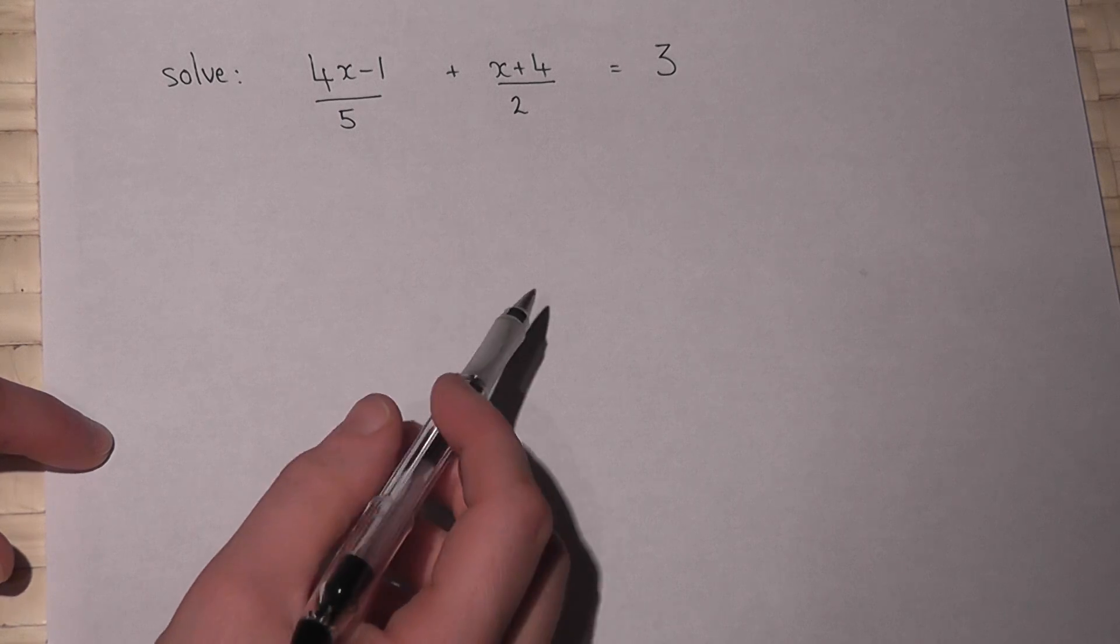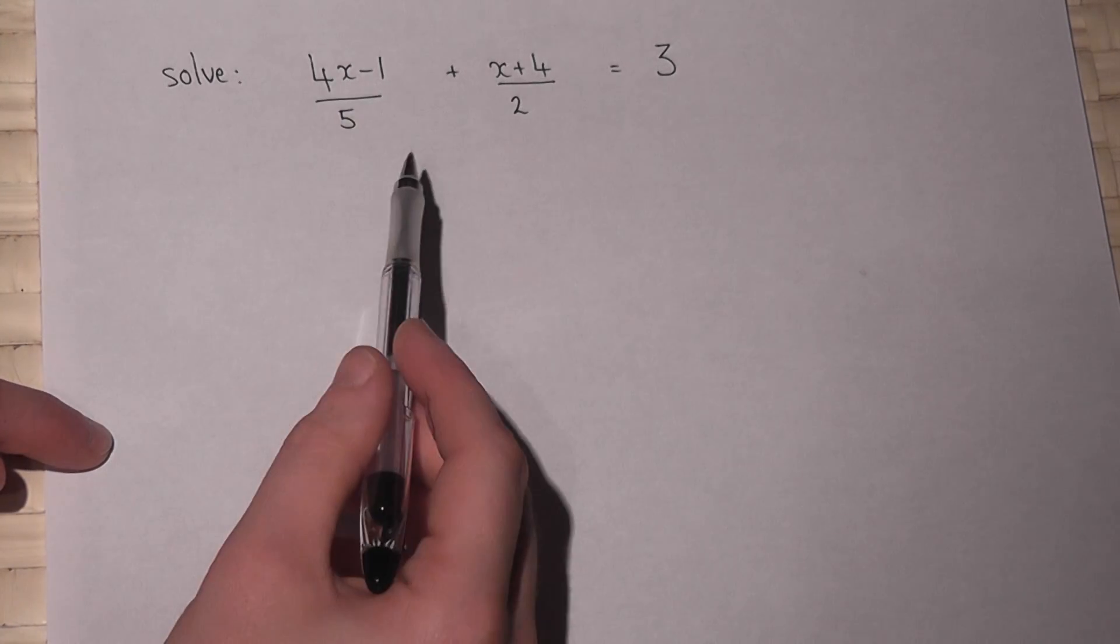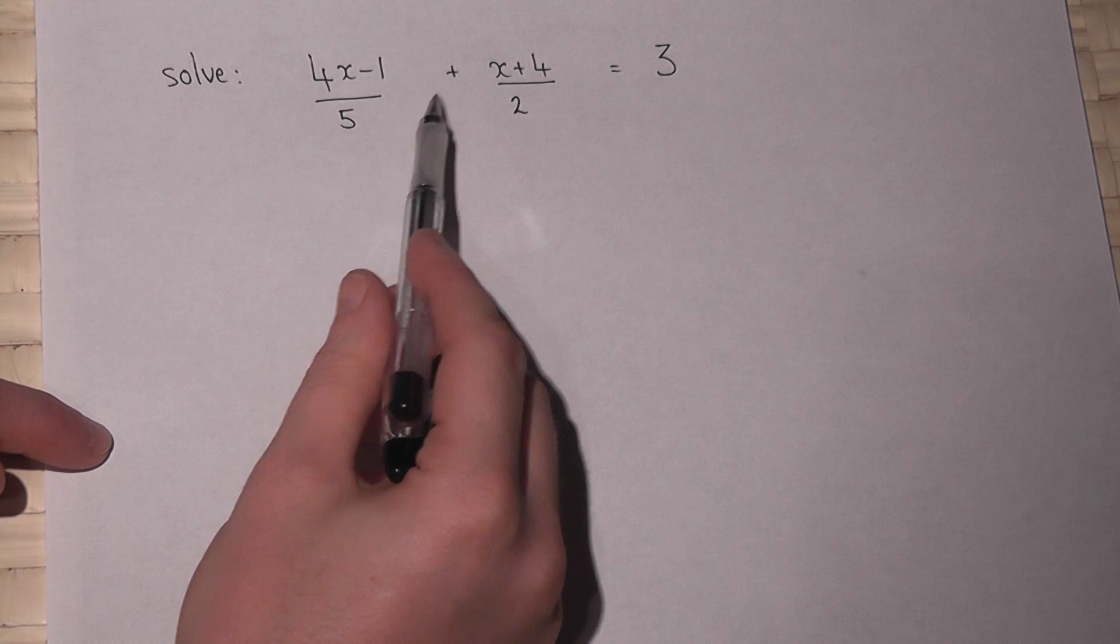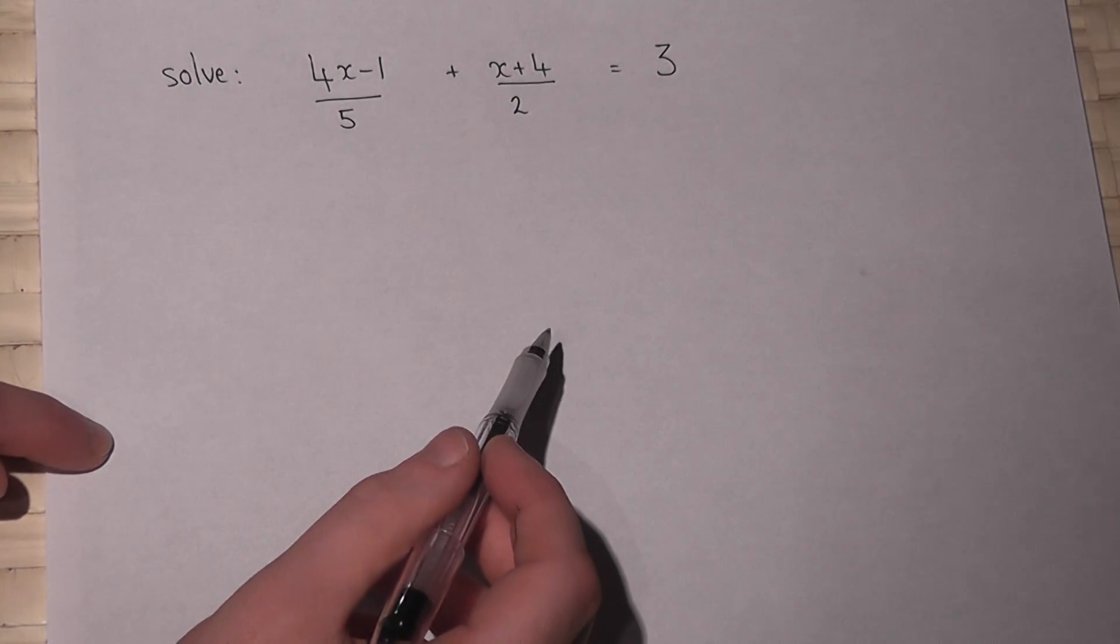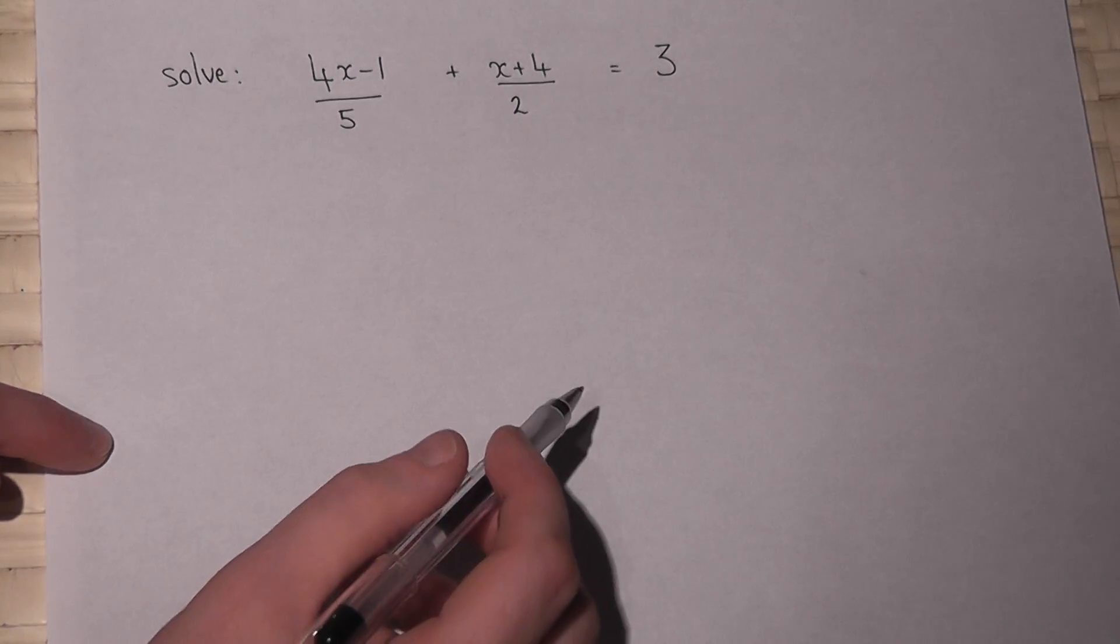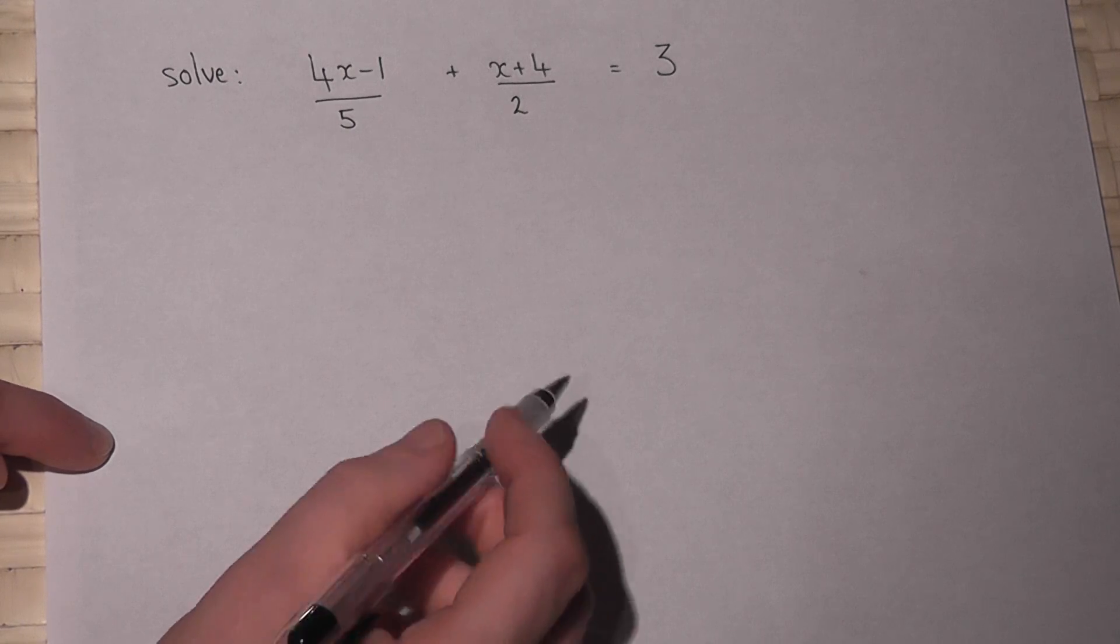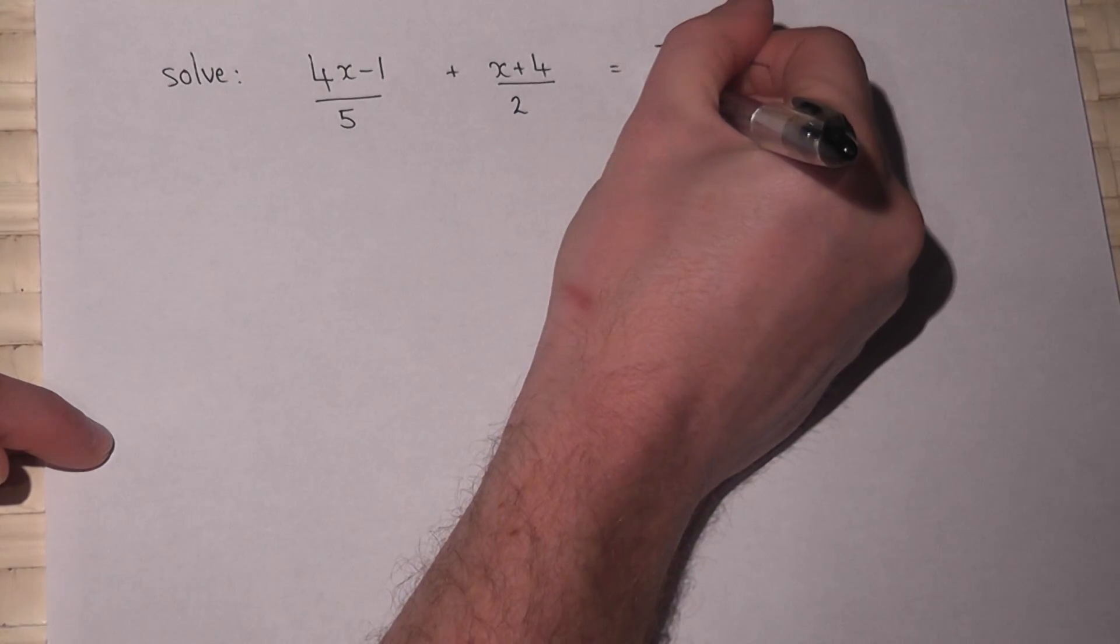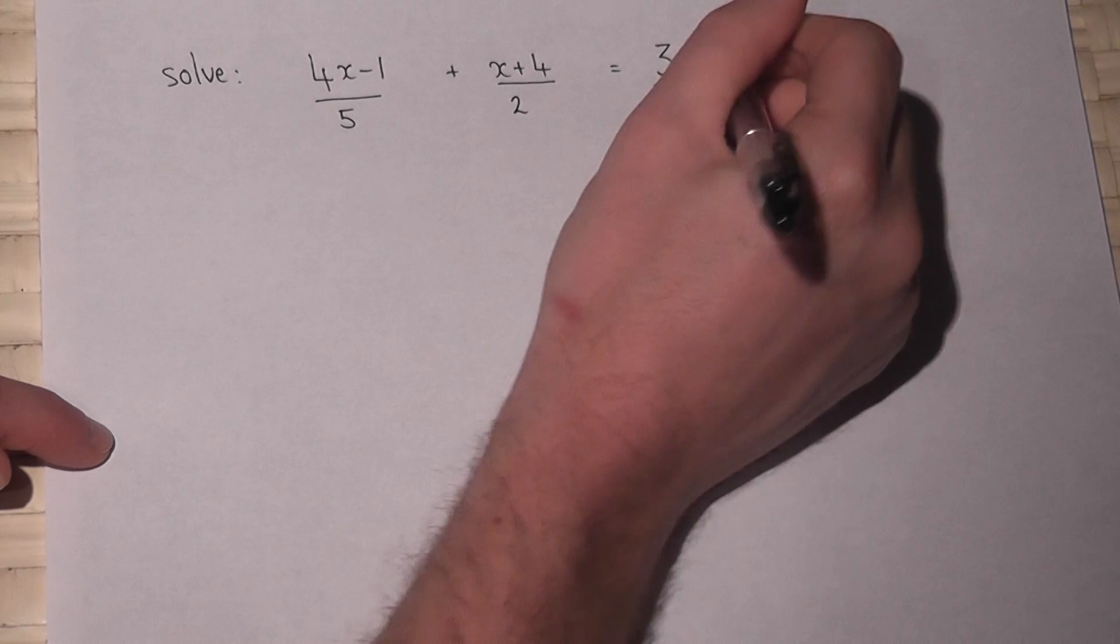This video reviews how to solve equations where you've got two fractions added together equal to an integer. The best way to solve these is to write the integer as a fraction, i.e., 3 over 1.